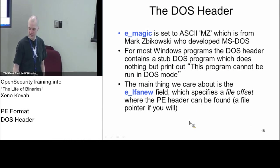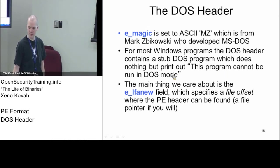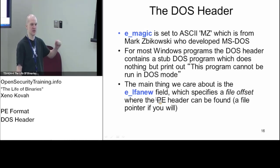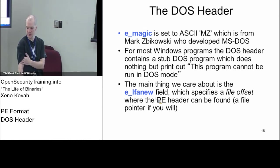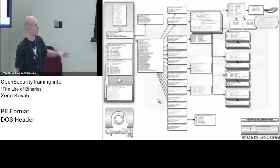So MZ is what you'll be looking at, and 'This program cannot be run in DOS mode' as well. And then e_lfanew gives us a file offset — this is saying how far into the file is the next header, the PE header or NT header as we'll sometimes call it.